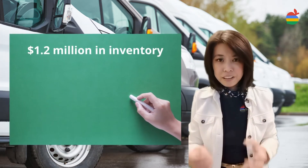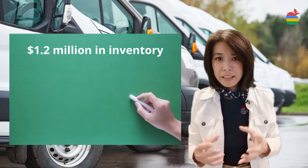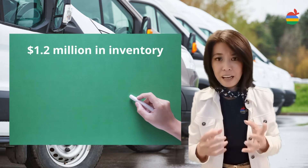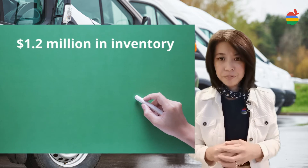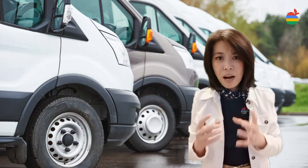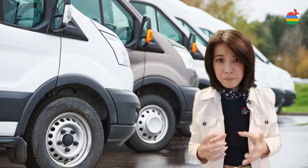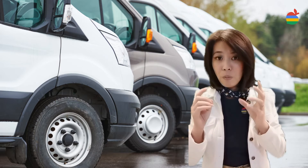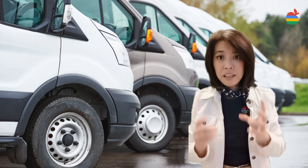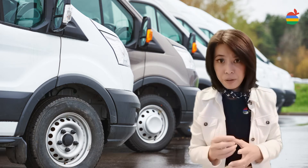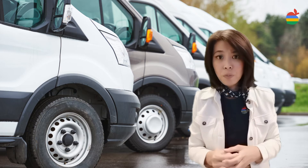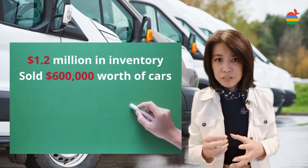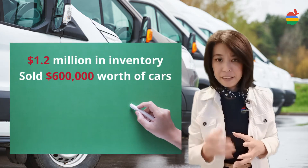The first thing you have to do is add back in the inventory that left during the last accounting period. When you pull up your inventory numbers — not the sales number, since what you sold might not be its full value — you see that you have sold 600,000 worth of cars last month.